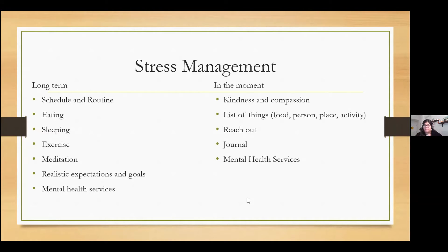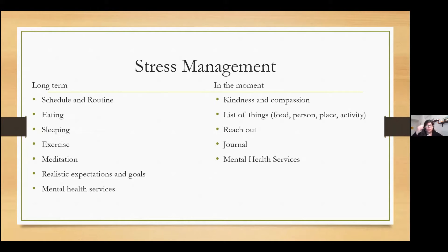Also, have a self-care list of food, person, place, and activity — so when you're feeling overwhelmed, you have a particular food to go to, a person to call, a place that makes you feel comfortable, and an activity like playing video games, reading, or taking a walk. Having even one person to reach out to — even if they're in your home country — is valuable. Journaling can also help if your thoughts are spiraling or you're overthinking, and of course, reaching out to mental health services.